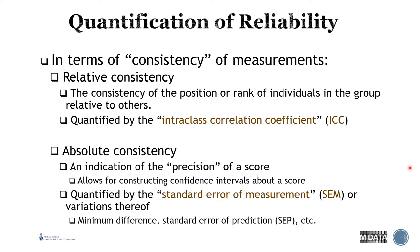To quantify reliability, we can measure relative consistency — the consistency of the position or rank of individuals in the group relative to others — quantified by the intraclass correlation coefficient (ICC). We can also measure absolute consistency, which indicates the precision of a score and allows for constructing confidence intervals. This is quantified by the standard error of measurement (SEM), as well as minimum difference and standard error of prediction.